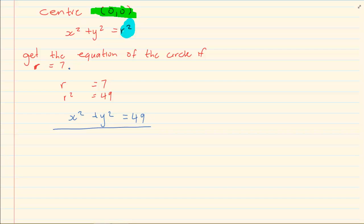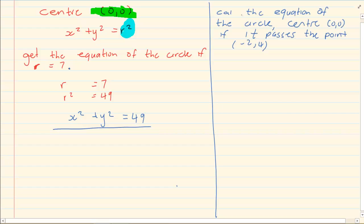Now the second way they can ask us is calculate the equation of the circle center (0,0) if it passes the point (-2, 4). So we know the equation is going to be x squared plus y squared is equal to r squared, because it is specifically passing the center (0,0). Now our aim is to get r squared. That is what we want to solve.